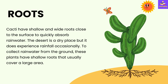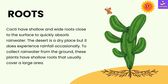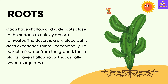Next, the roots of cactus plant. Cacti or cactuses have shallow and wide roots close to the surface to quickly absorb rainwater. Shallow roots means they are not very deep. The desert is a dry place but it does experience rainfall occasionally, and to collect rainwater from the ground, these plants have shallow roots that usually cover a large area to absorb water.